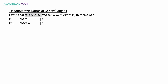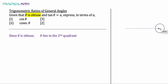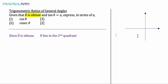Since theta, as mentioned in the question, is obtuse — by obtuse, angles refers to angles that are greater than 90 but less than 180 degrees — so theta lies in the second quadrant.